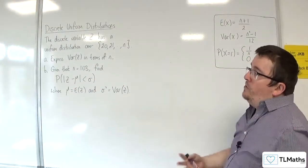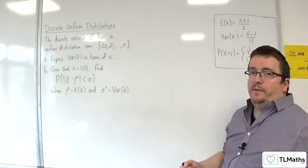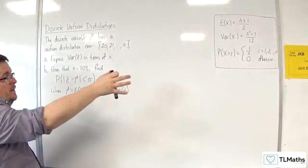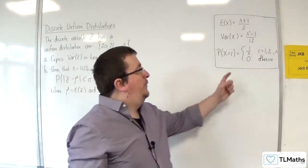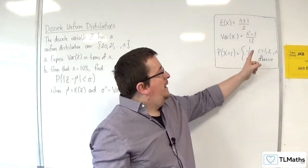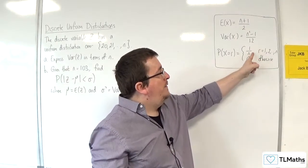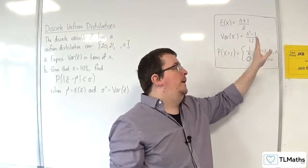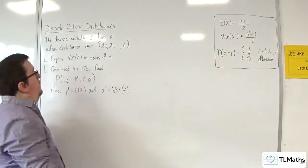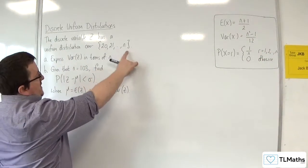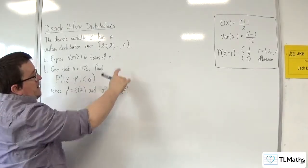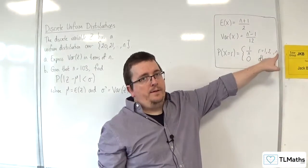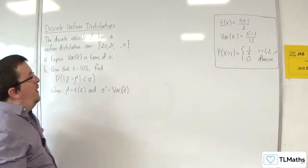Part A: express var(z) in terms of n. This is what's given to us in the formula booklet. Remember here that x is defined as having a probability of 1 over n for each of its values of r, which goes from 1 up to n. Here we're going from 20 up to n. Don't get confused—this n is not the same as that n here. Be very wary of that.